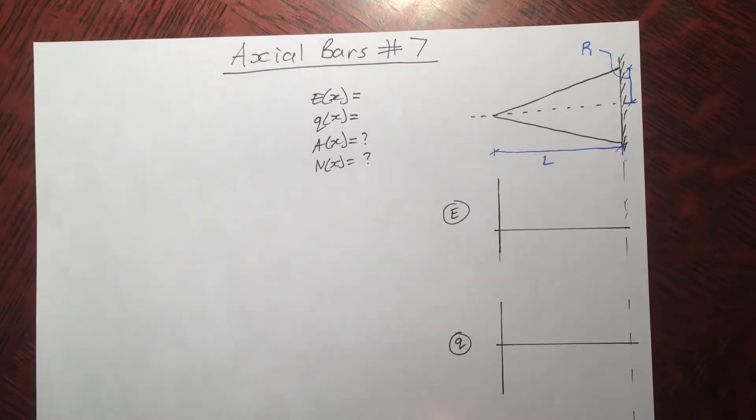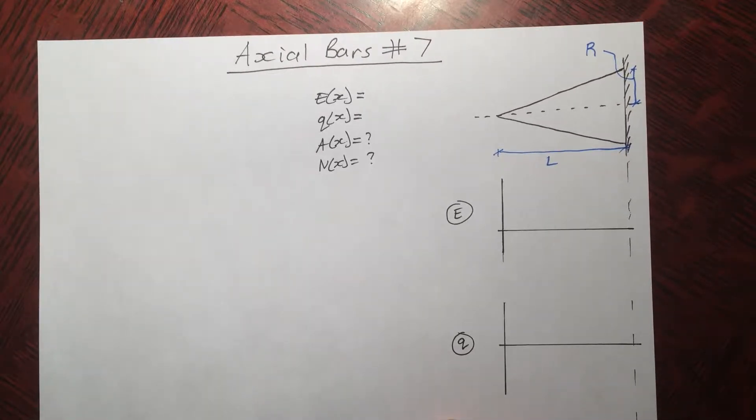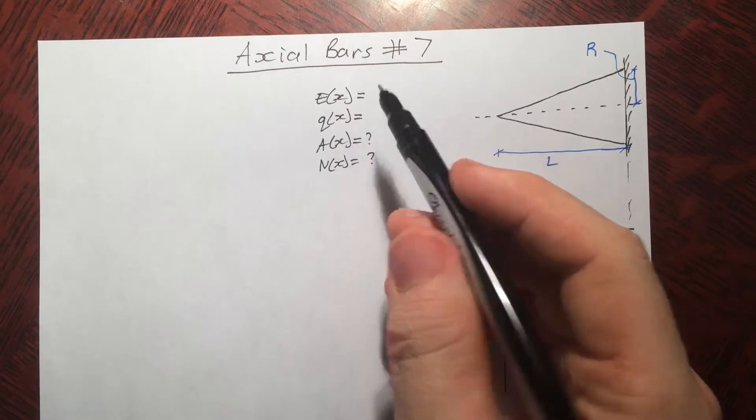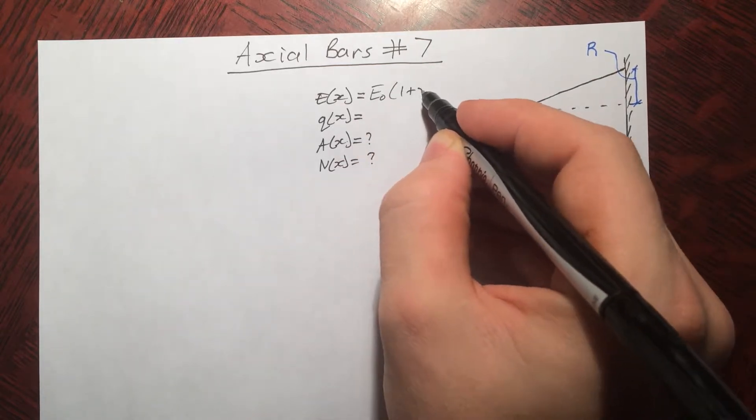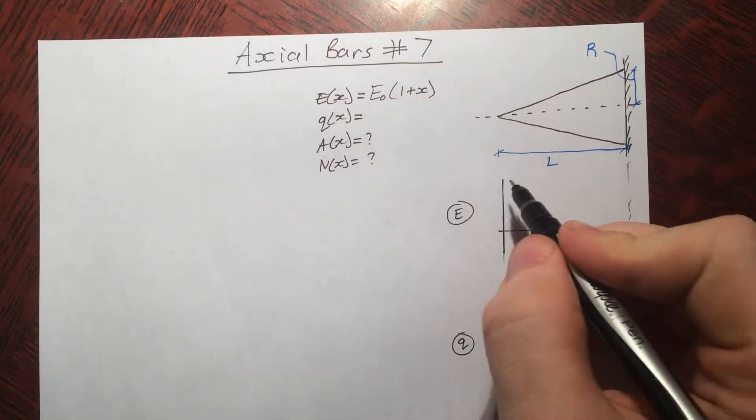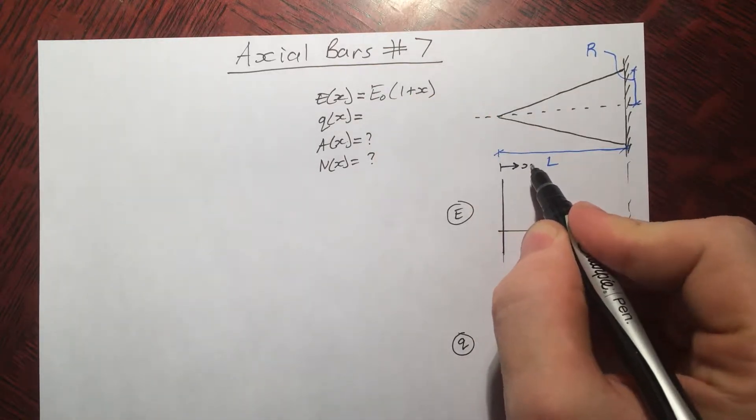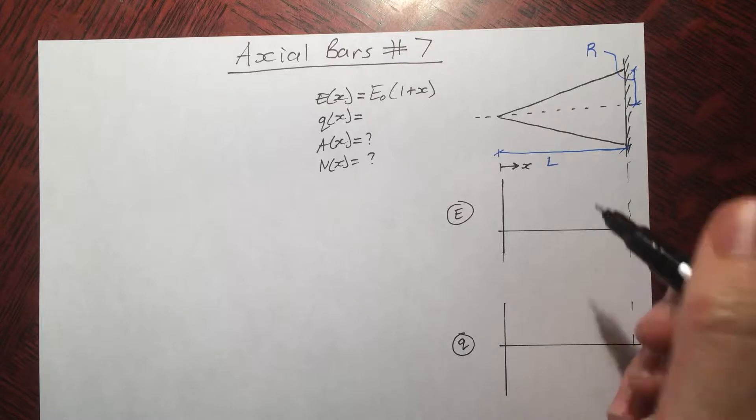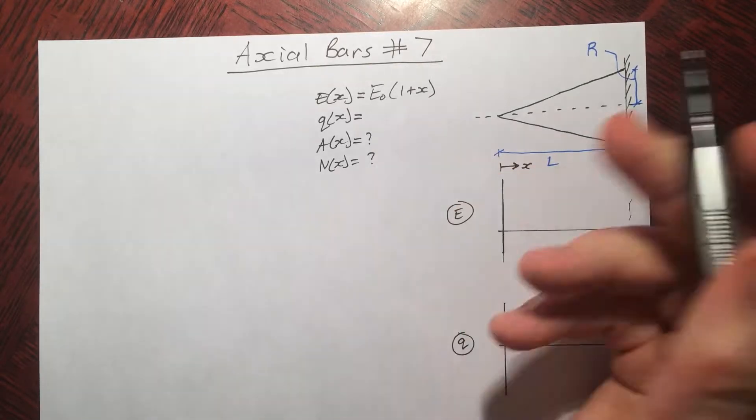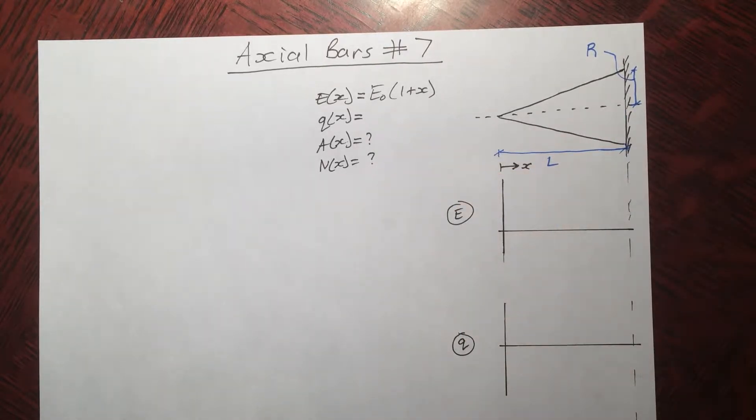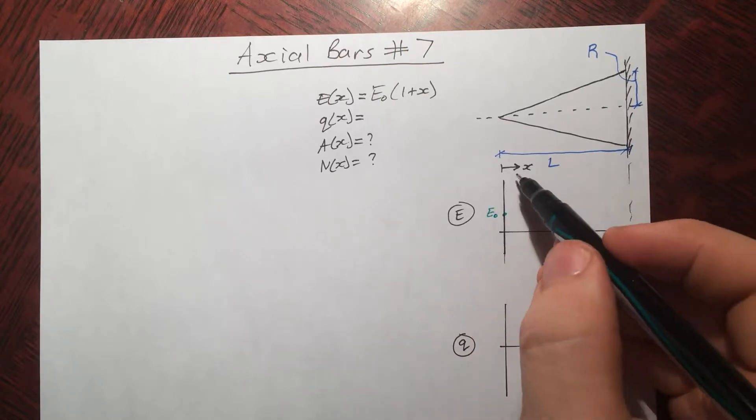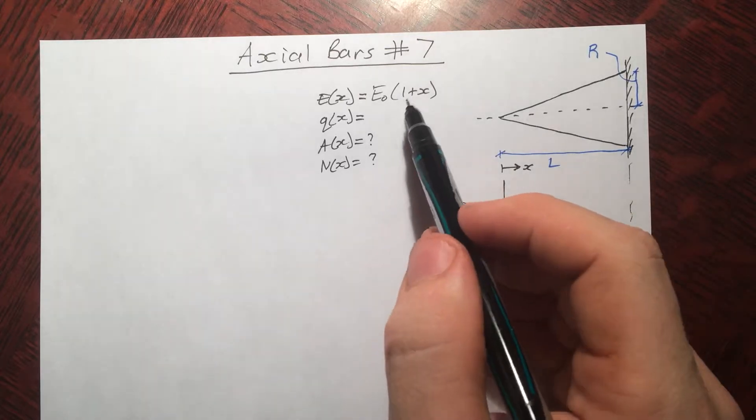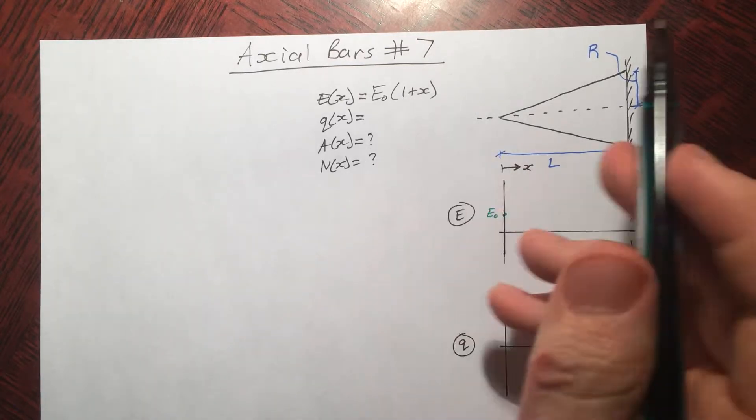So let's just assume our Young's modulus, e, is changing as a function of x according to this equation here. If we take x to start here, when x equals 0, it's just going to be an amount e naught.